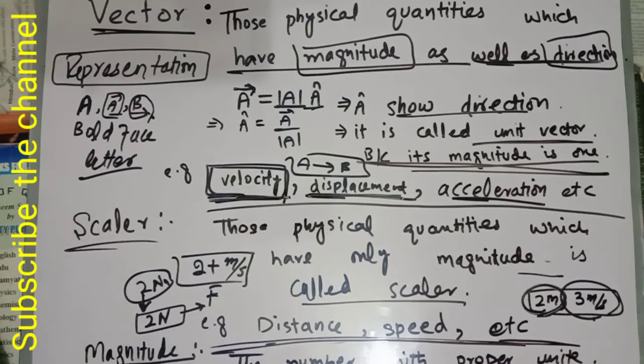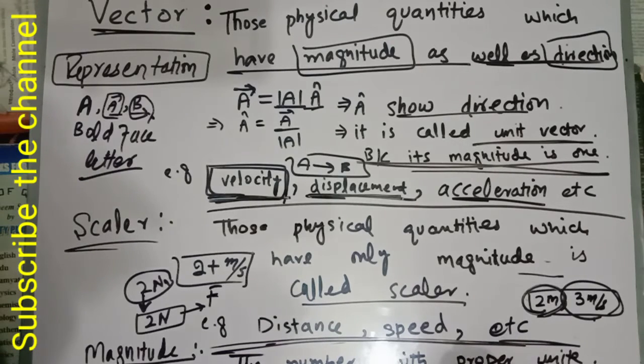With vectors, it is projectile motion. It's because vectors have proper direction. If something has proper direction and magnitude, we say it is a vector. Without the right direction, it is not allowed.